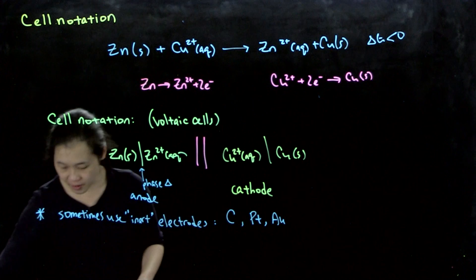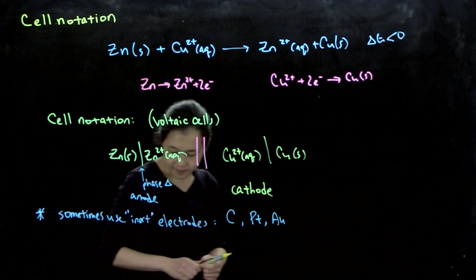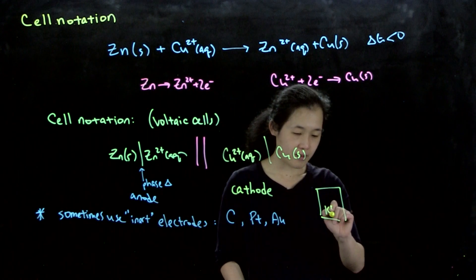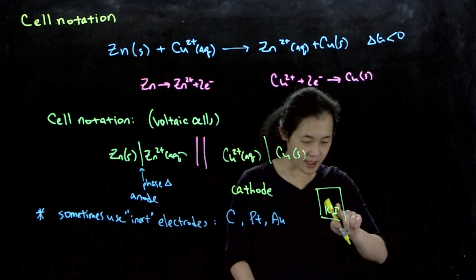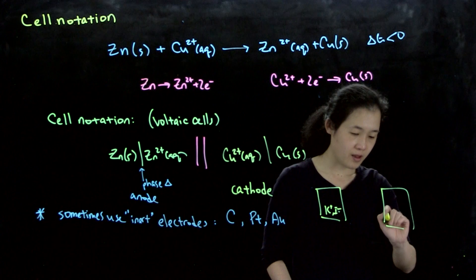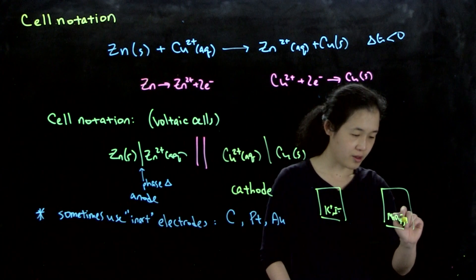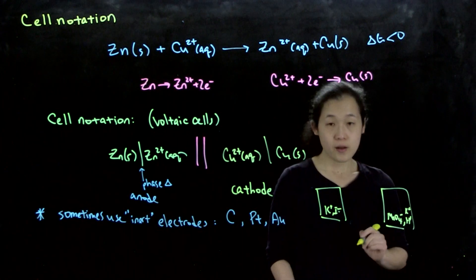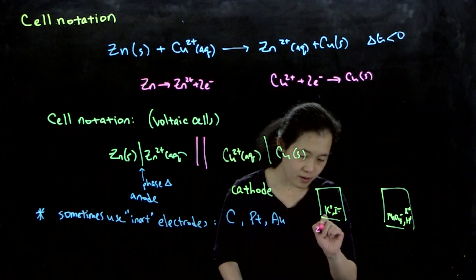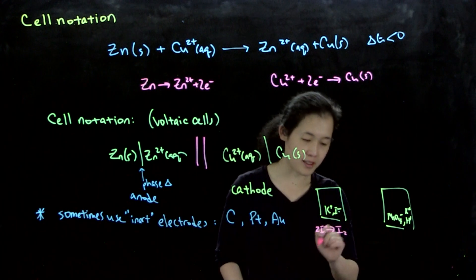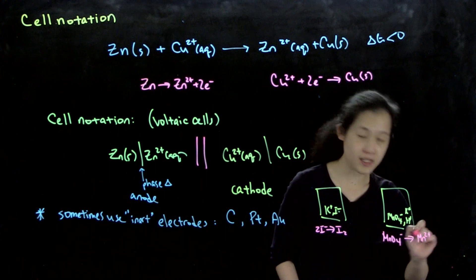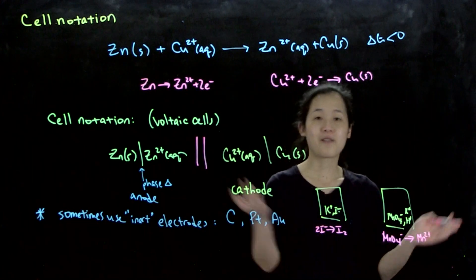As an example, suppose we have a cell where I have a beaker of potassium iodide (I-), and over here a beaker of permanganate and protons. Our redox couples are 2I- going to I2 - that's the oxidation - and permanganate going to manganese 2+. I haven't balanced this out, so you can balance that on your own.